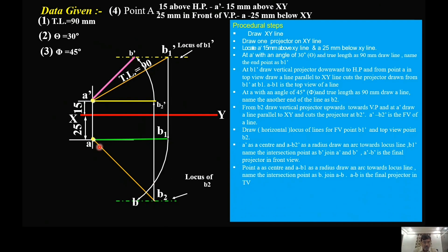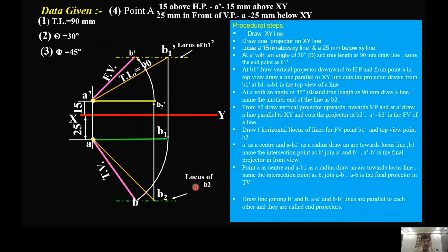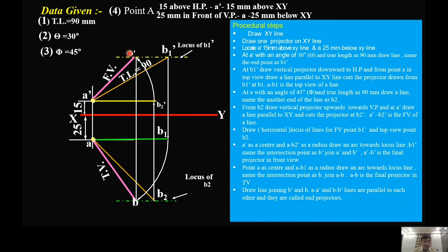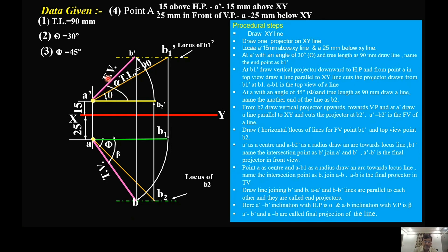Name this point B2 dash and join AB. This is the final projection of the line in the top view. Then join B dash and B. Here A, A dash, B, B dash are called end projectors, and they are parallel to each other. Whereas A dash B dash and AB are called final projections of the line. Phi is the true inclination of the line with VP, beta is the top view inclination with VP, and alpha is the front view inclination with HP.